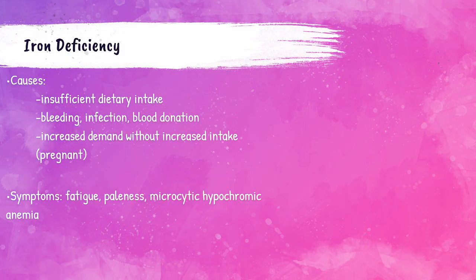Patients can have a deficiency of iron or an overabundance of iron. Those with not enough iron can experience fatigue and paleness. They will also have microcytic hypochromic anemia. The red blood cell indices in patients with microcytic hypochromic anemia will have a decreased mean cell volume, or MCV, and a decreased mean corpuscular hemoglobin concentration, or MCHC, on their complete blood count test. For more on MCV and MCHC, check out the red blood cell indices video on this channel.